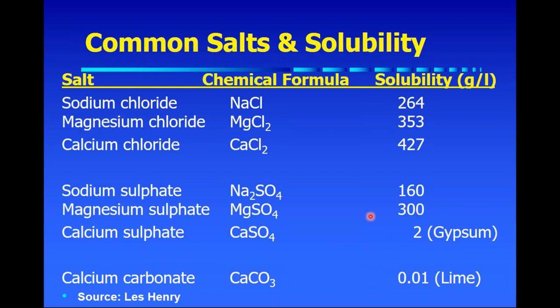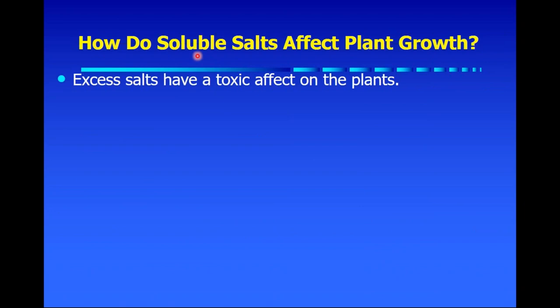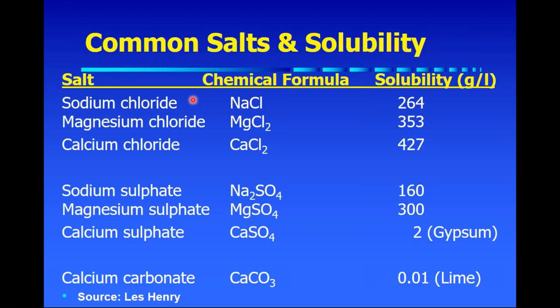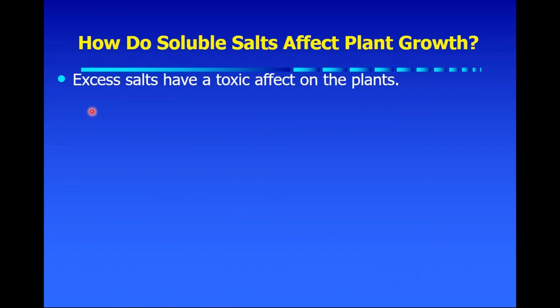How do soluble salts actually affect plant growth? First, these soluble salts can have a toxic effect on plants when they're at high concentration. Note that magnesium and calcium are required macronutrients for plant growth, chloride is a micronutrient, and sulfate is a macronutrient. Even sodium isn't normally considered a nutrient, but for crops like sugar beets and corn it's a required micronutrient. So these different salts are actually required by crops for growth, but when they're at a high enough level, it can have a toxic effect.